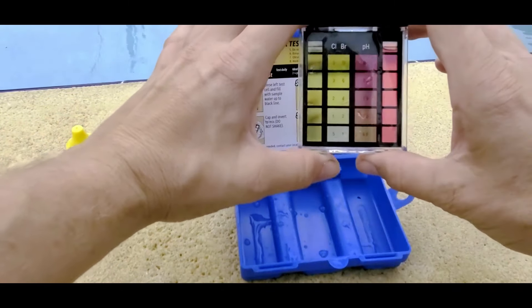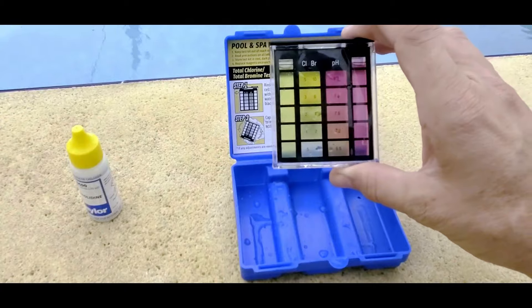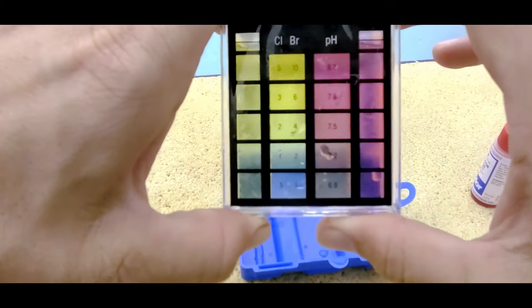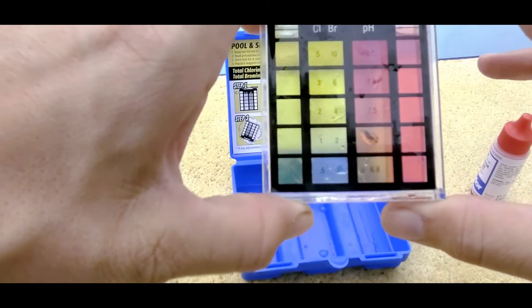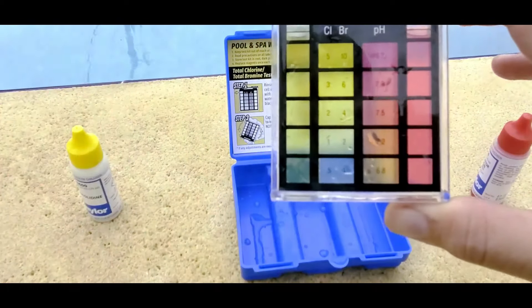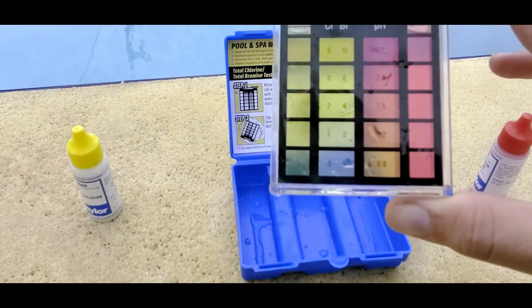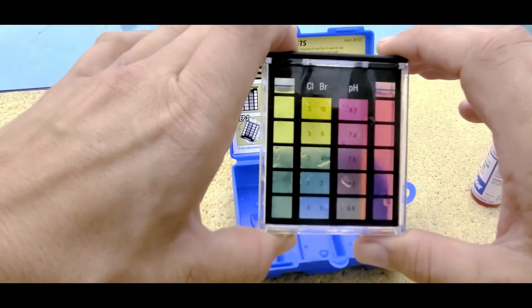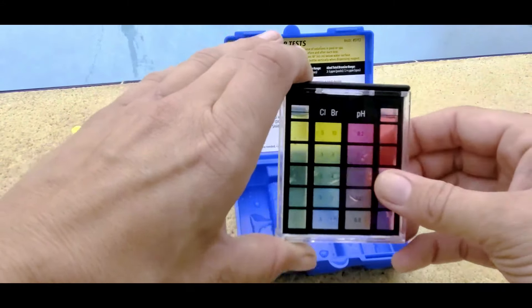And I would say it's kind of hard to tell in the video, but it looks like about a 7.8 on the pH. And I would say around a three to a four for chlorine. Just looking at this, I think my pool is fine. I mean, it's that simple.